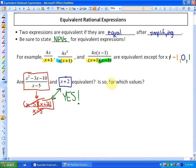The answer to the question, if so, for which values? You'll notice that the only non-permissible value in this case, before simplifying, was that they're equal for all values except for your non-permissible values - x cannot equal 5. So all values except x is equal to 5.